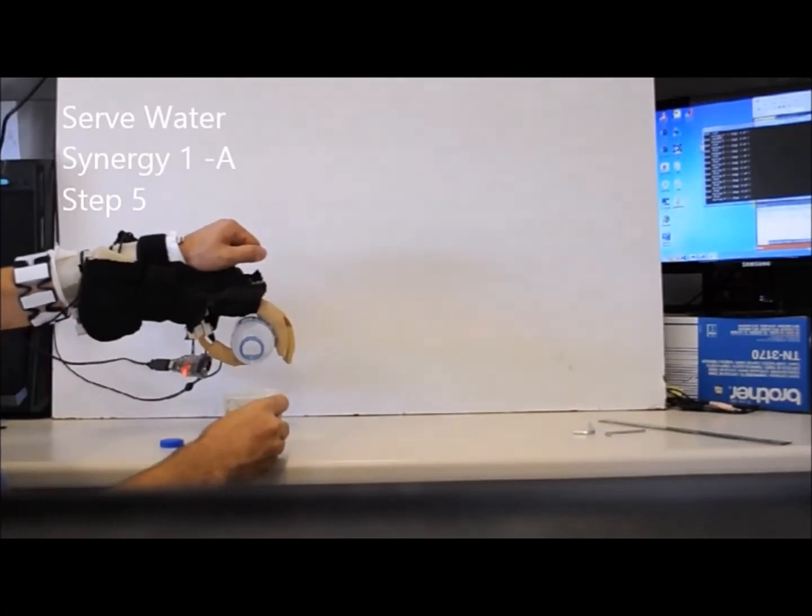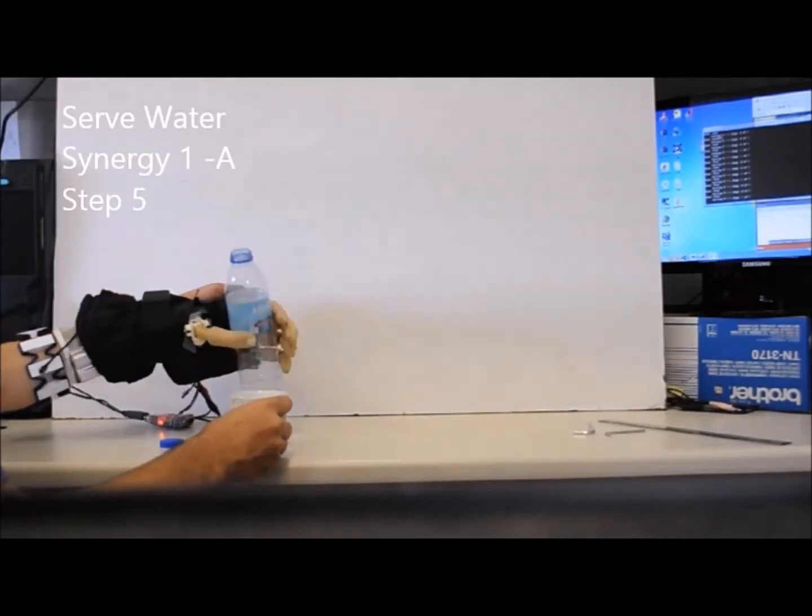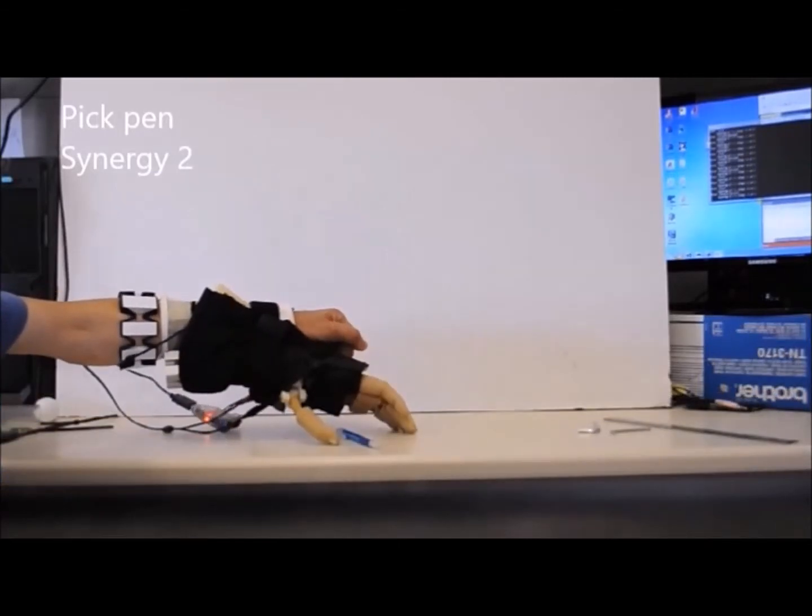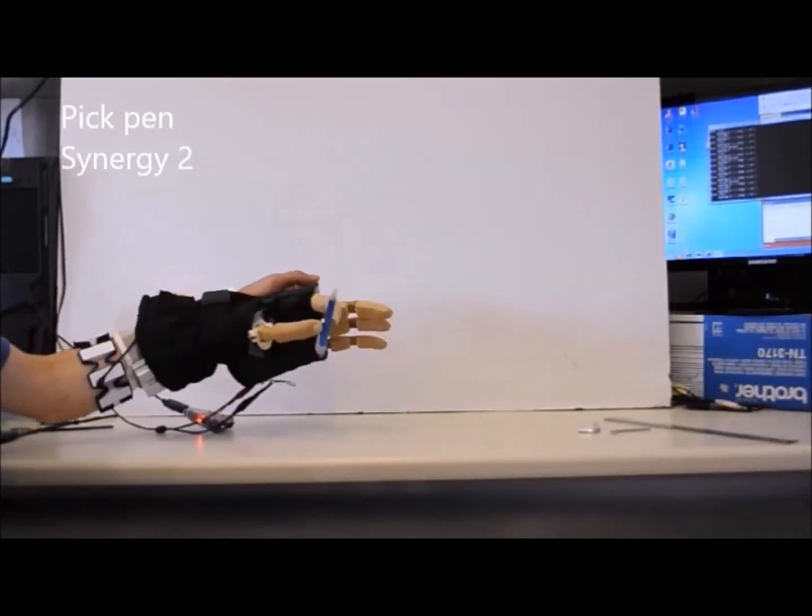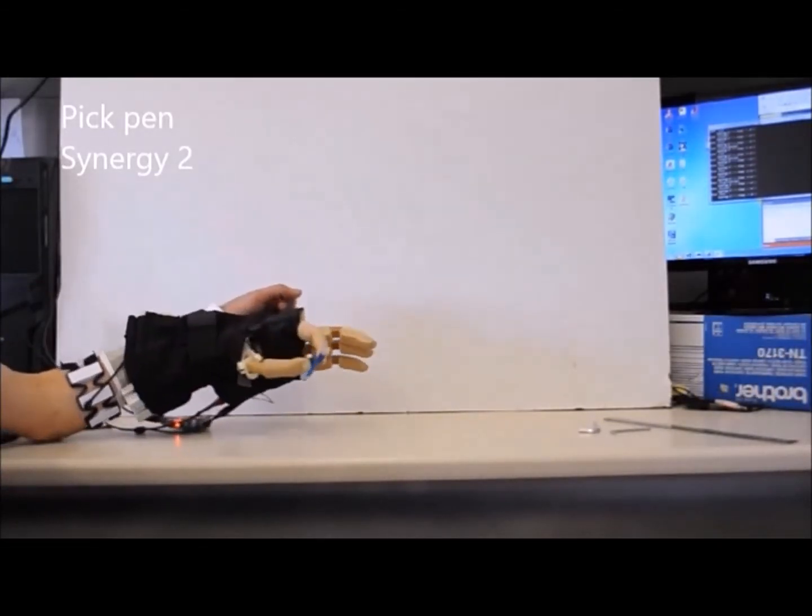Here, we show how different objects are being grasped with the ISR Softhand with different synergies. The users can pick an object on a table or easily serve water.